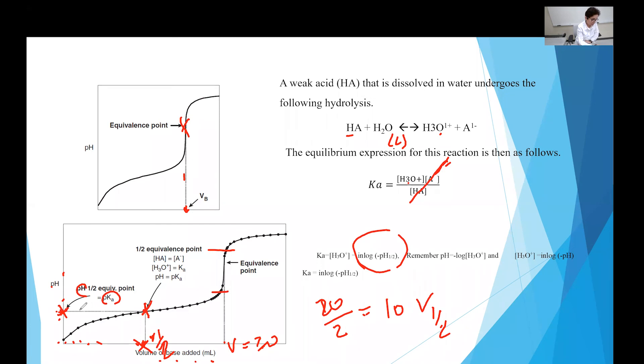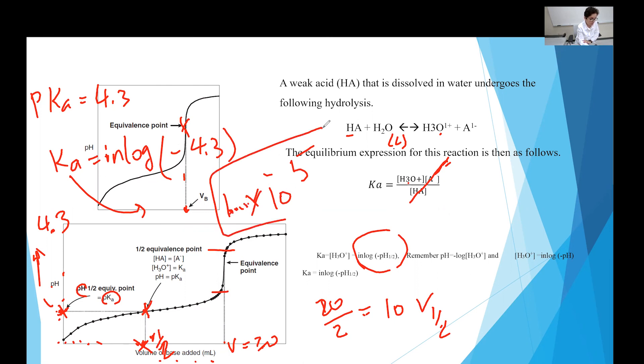So let's say if the pH here, hypothetically, is 4.3. If the pH at half point is 4.3, then pKa equals 4.3. And Ka is going to be equal to inverse log, or shift log in your calculator. And you are going to use negative 4.3. So this number, it would be like 1 times 10 to negative 5. And 1 point something times 10 to negative 5 is what you are looking for.